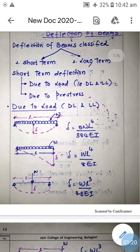Because of the prestress, deflection in the beams will always be upward — the beam forms a camber. This upward deflection happens only because of prestressed concrete. So deflection due to prestress is always upward deflection.